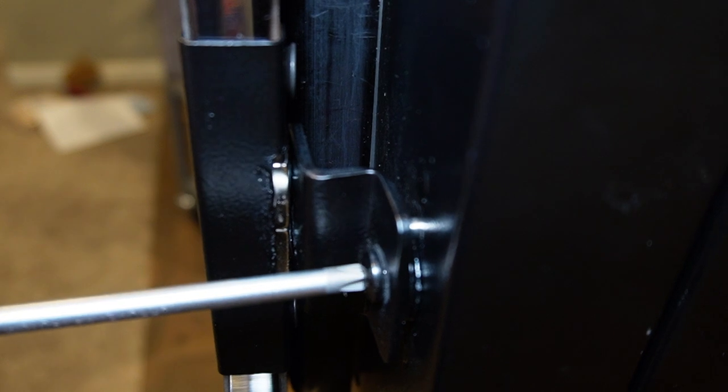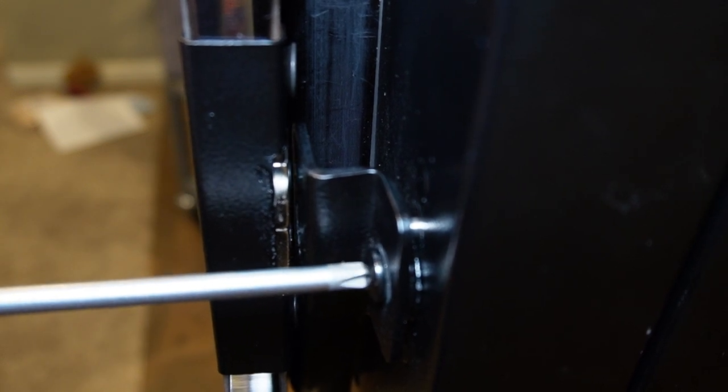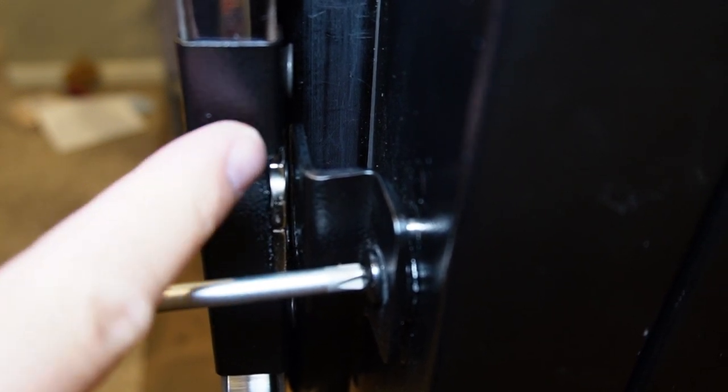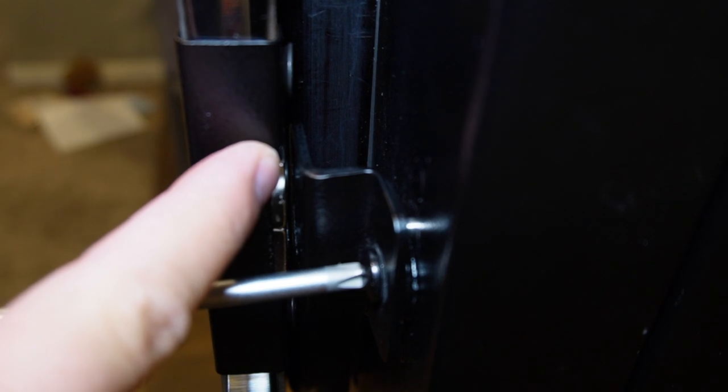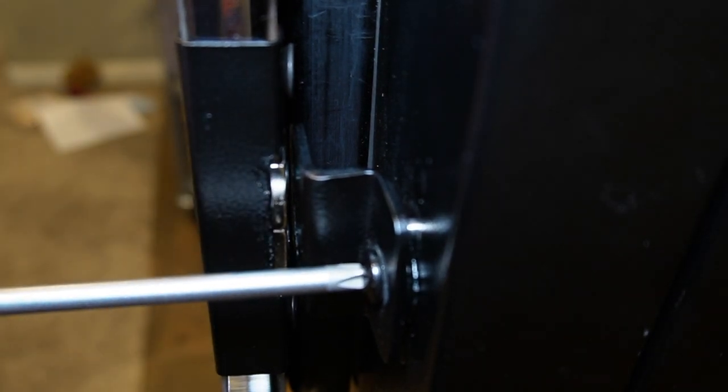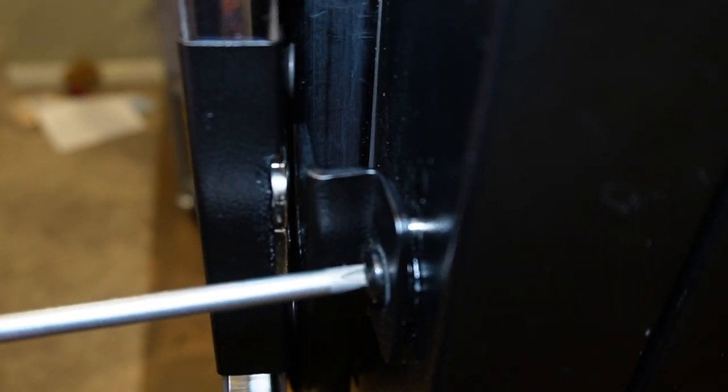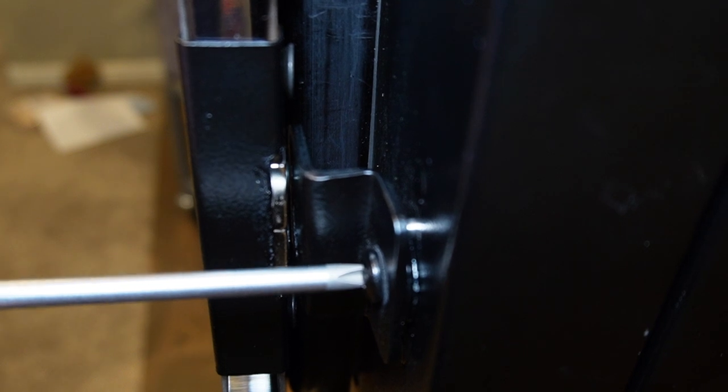Tighten the Phillips screw until you see the magnet plate pull away from the back of the magnet on the door. Then loosen it just enough to touch the door again.